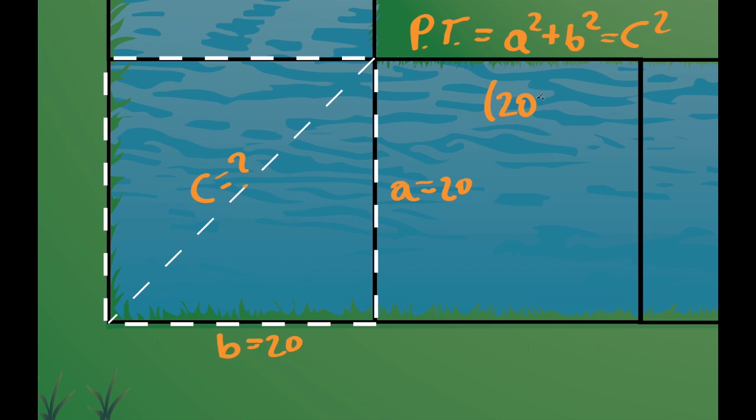We then plugged it in. So a squared plus b squared, or 20 squared plus 20 squared, equals c squared.